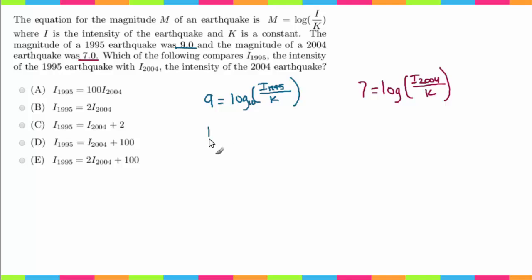So what I mean by that is this 10 becomes the base here, this becomes the exponent, and this is equal to what's ever in these parentheses here. So that equals I sub 1995 over K. And I'm going to use green for K—might be a little bit difficult to see, but that's just a reminder that the K's are going to be the same because if you remember from the problem, it says K is a constant.